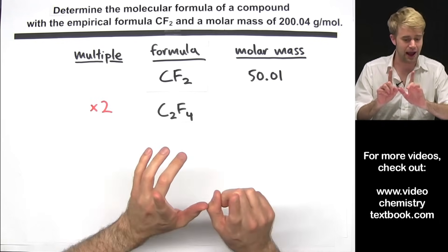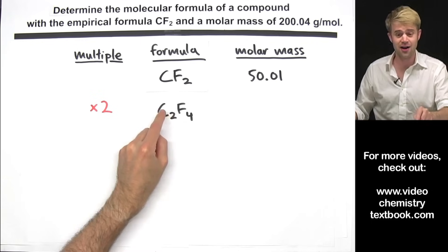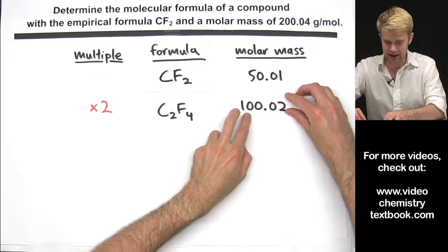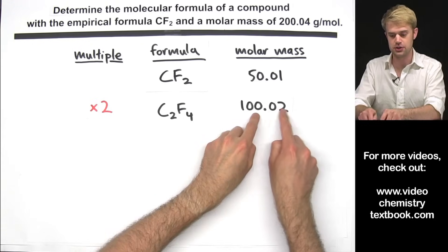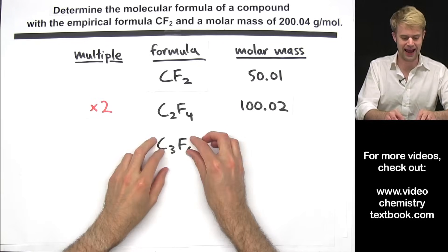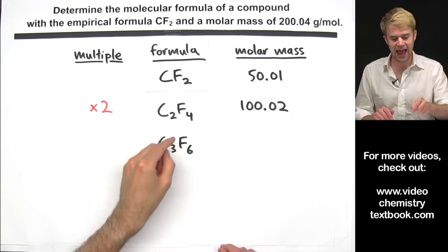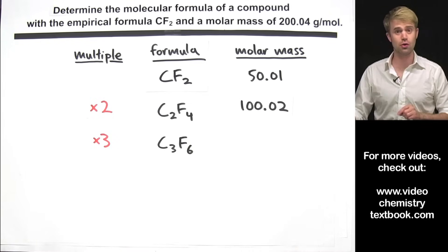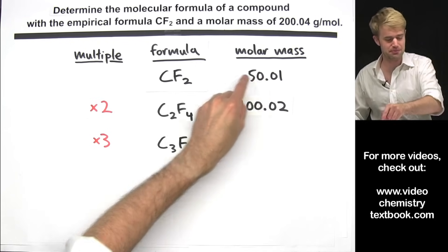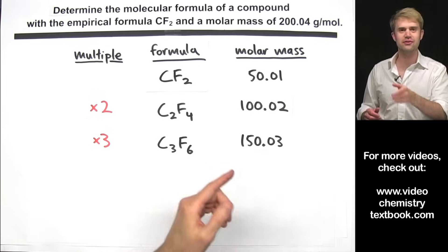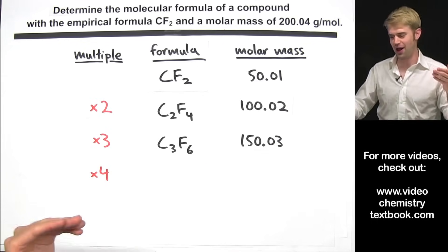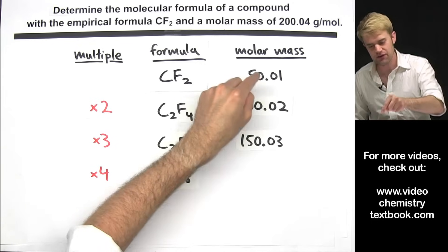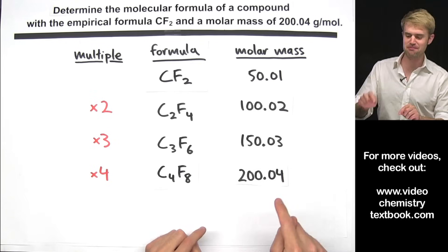The same applies to the molar mass. We take the empirical formula's molar mass and multiply it by 2. To find the molar mass of C2F4, we take 50.01 times 2 and get 100.02. C3F6 is obtained by multiplying the empirical formula by 3, giving a molar mass of 150.03. We could also multiply by 4 to get C4F8, with a molar mass of 50.01 times 4, which is 200.04.